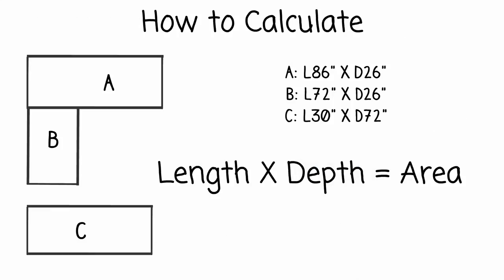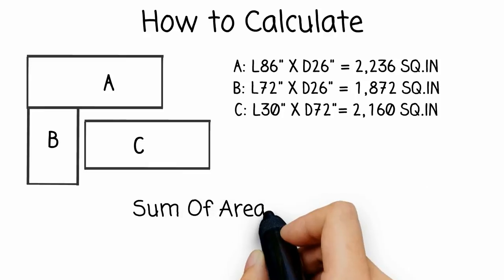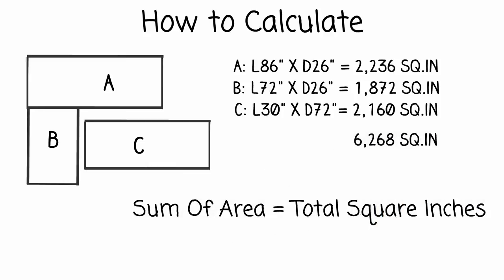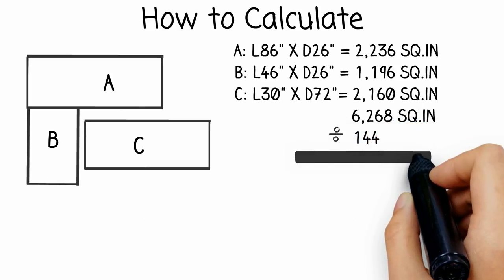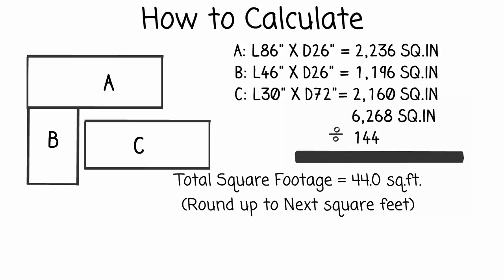Calculate the square footage based on your measurements. Multiply length by depth for each piece. Add all the sections together to calculate the total square inches. Divide the total square inches by 144 to get the total square feet.